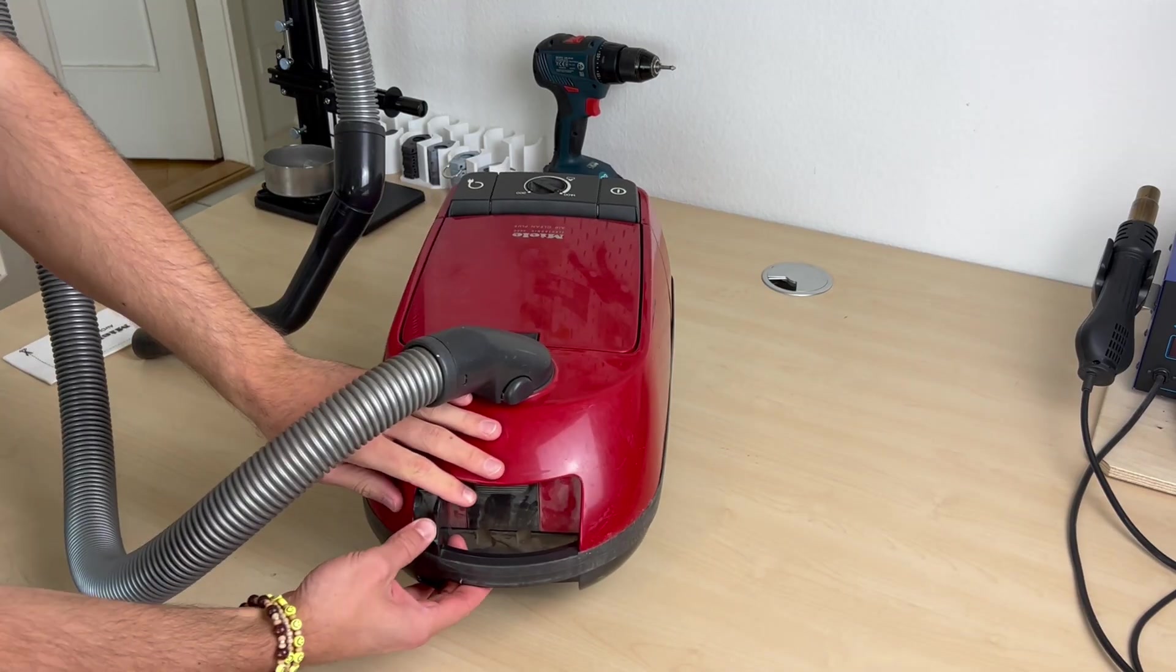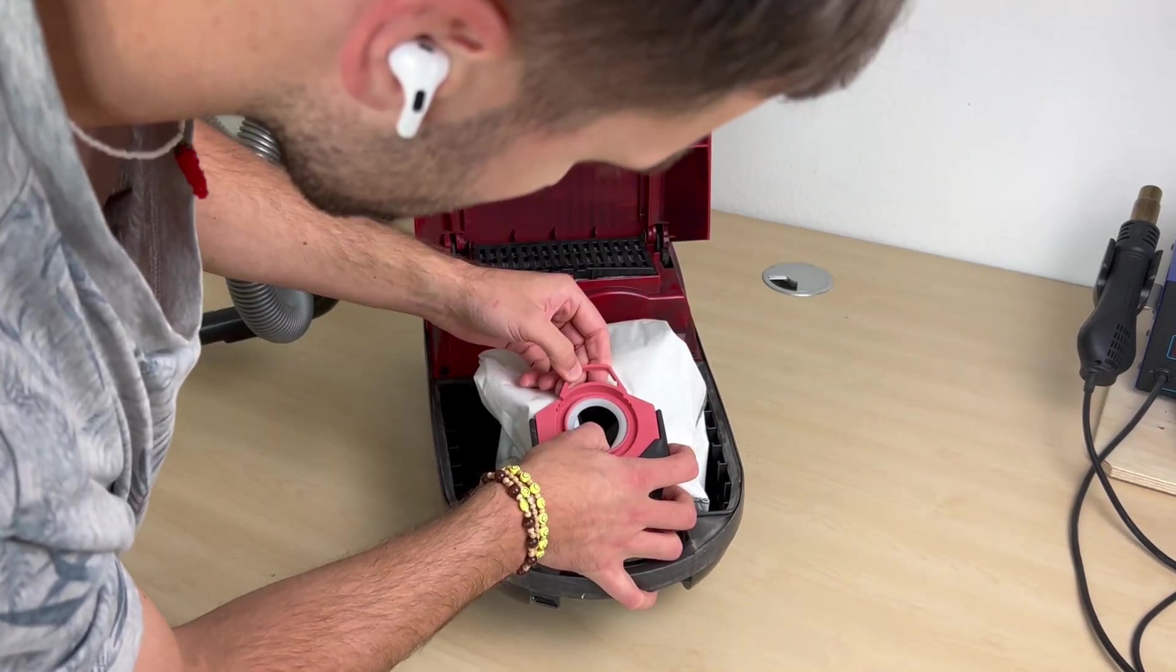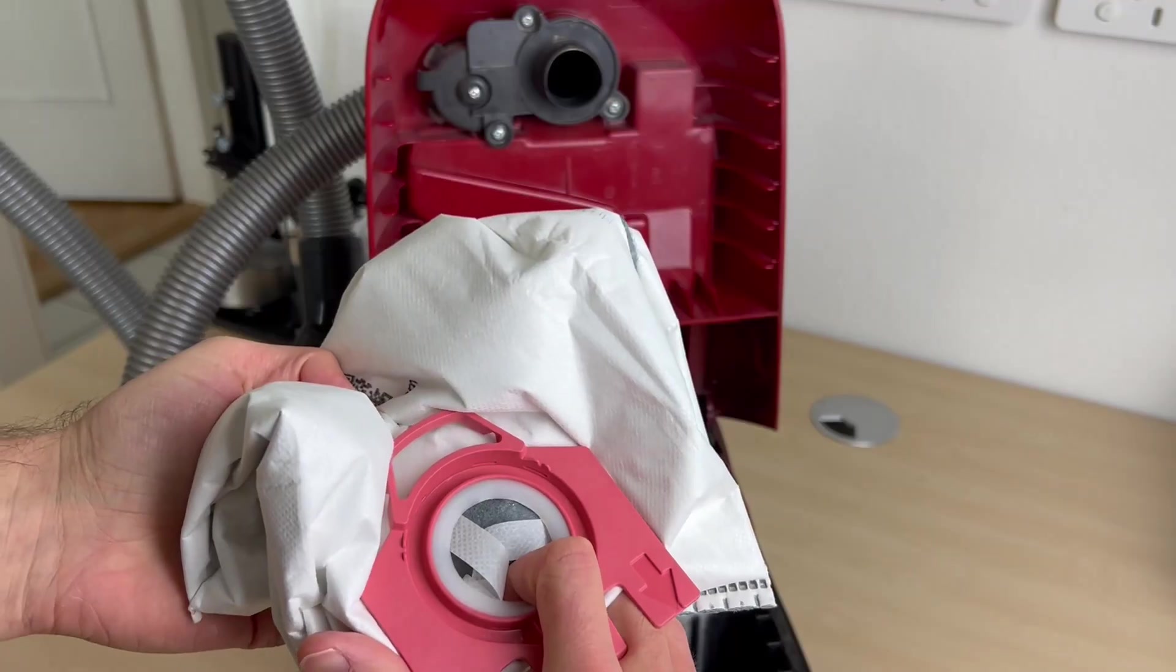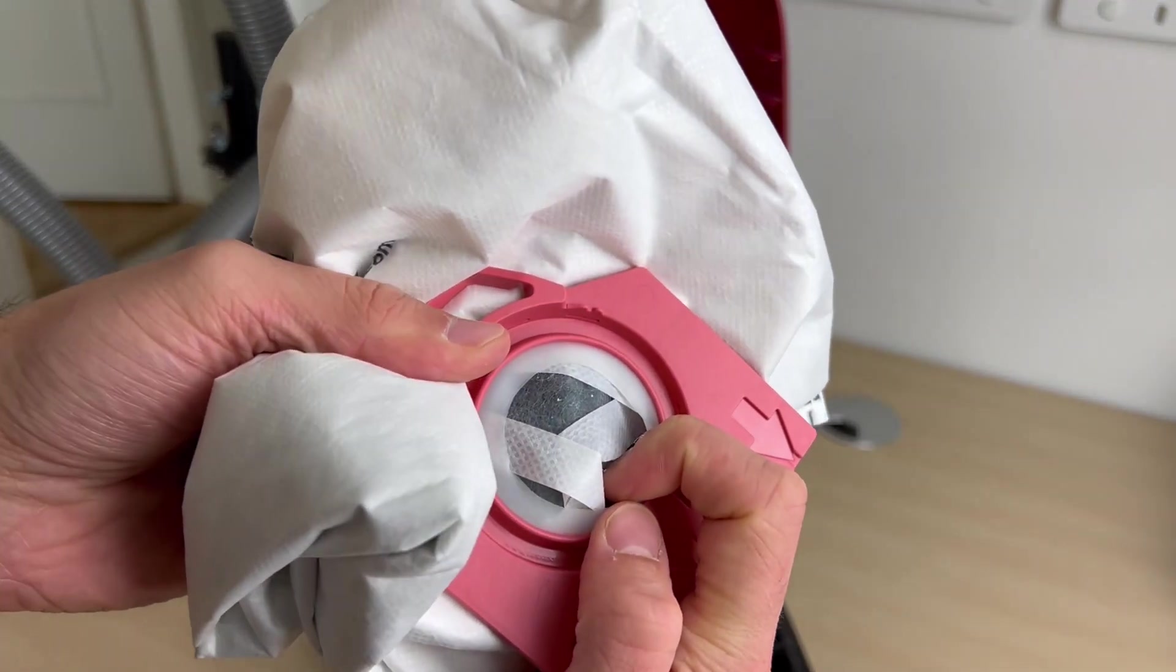To check if particles have left the device unfiltered, I open the vacuum again and check the bag. It's really hard to see, but some small particles definitely reach the bag, but it's not a lot.